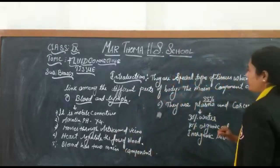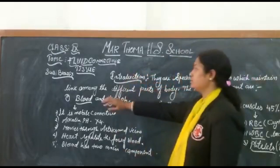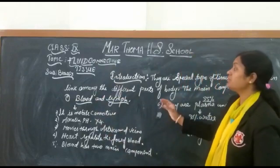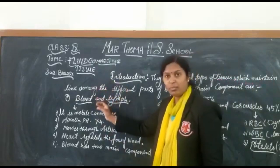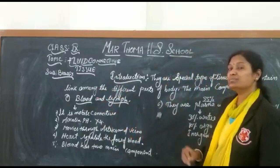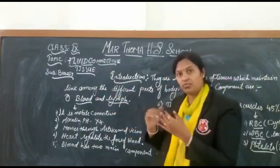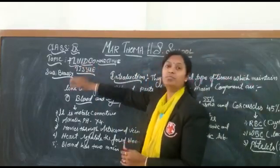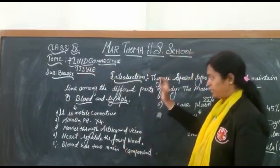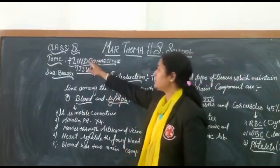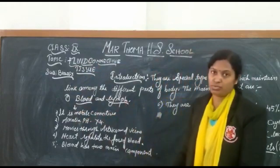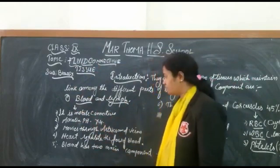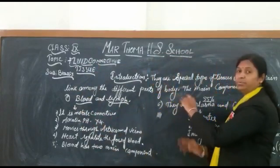The very important components of this fluid connective tissue are blood and lymph. Blood is the mobile connective tissue — it is mobile because it can move and flow throughout our body as it is in fluid form. Therefore, blood is called the fluid mobile connective tissue, and the pH of blood is 7.4.